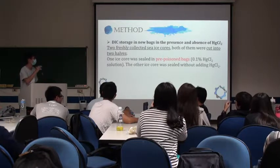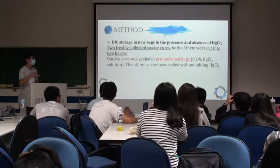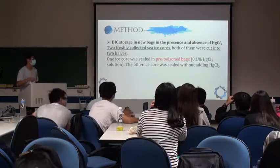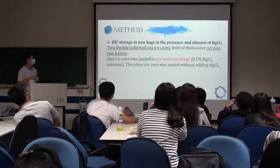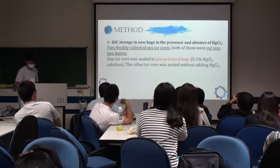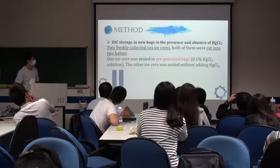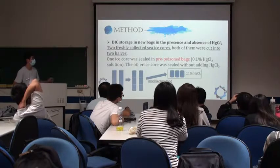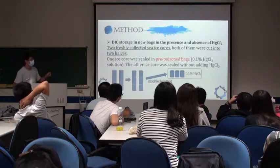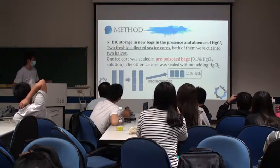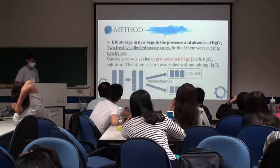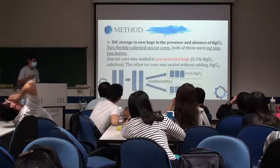This is a second experiment to test the modified method. Two freshly collected sea ice cores were each cut into two halves. One core was sealed in a pre-poisoned bag containing 0.1% mercuric chloride solution, and the other ice core was sealed without adding it. Both used the modified method.